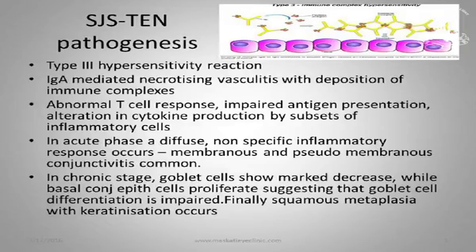What we do know is that it's a type 3 hypersensitivity reaction. IgA-mediated necrotizing vasculitis occurs with deposition of immune complexes, abnormal T cell response, impaired antigen presentation, and alteration in cytokine production by subsets of inflammatory cells. Basically, it's a typical type 3 hypersensitivity.